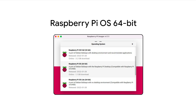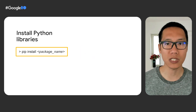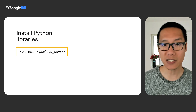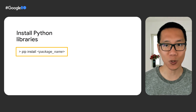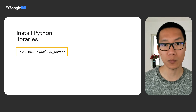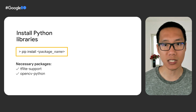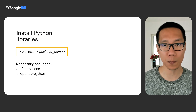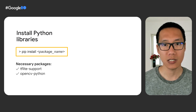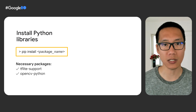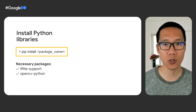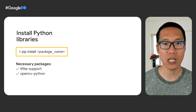You can choose the 64-bit OS from the Raspberry Pi imager menu. Once you have installed the Raspberry Pi OS, the next step is to install the necessary libraries. We use Python to run TensorFlow Lite models on Raspberry Pi, so you should start by installing the tflite-support Python pip package. This library is used to run TensorFlow Lite models. Then you should also install OpenCV Python to capture images from the camera.